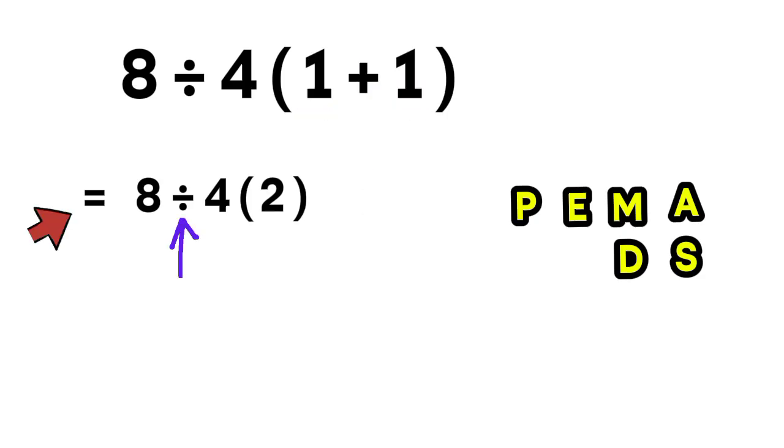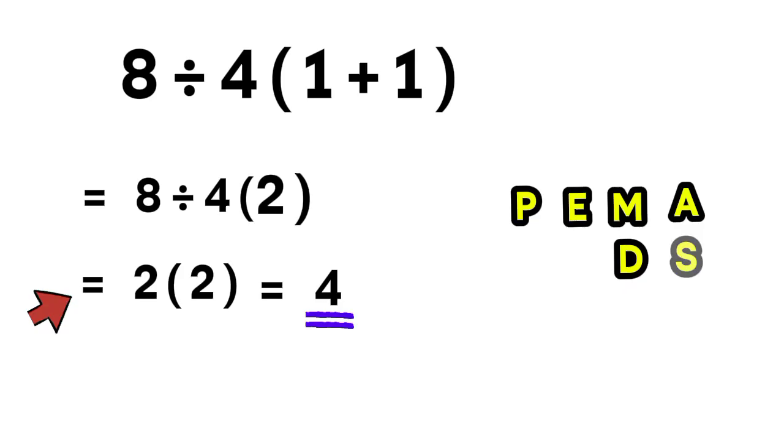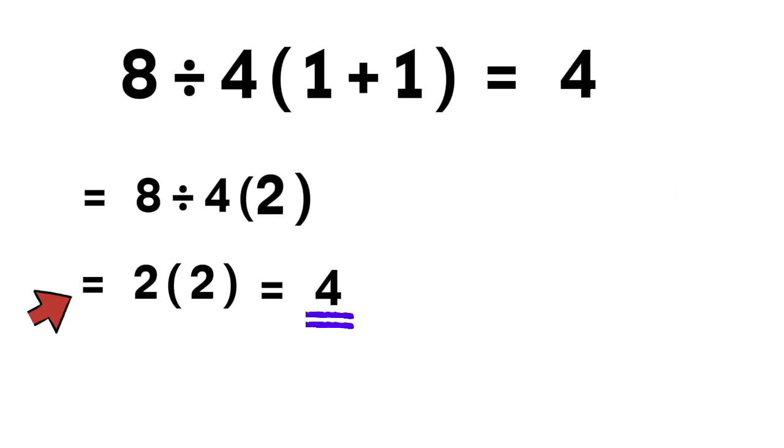We have one division and one multiplication. And remember, multiplication and division are equal in priority, so we move from left to right. First, the division. 8 divided by 4 is 2. Now, we're left with 2 times 2, and 2 times 2 equals 4. That's our final answer. The correct answer is 4.